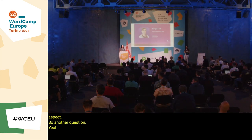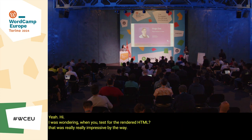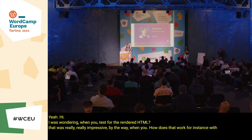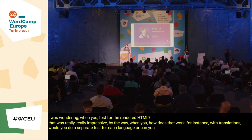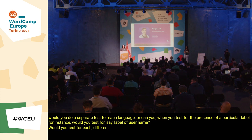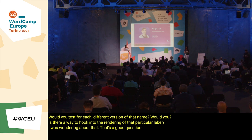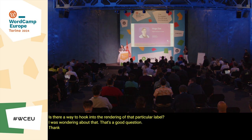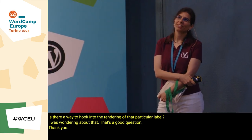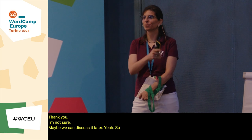Audience question: When testing rendered HTML, how does it work with translations — would you do a separate test for each language, or test for the presence of a particular label like 'username' in each version? Vraja: That's a good question. I'm not sure — maybe we can discuss it later at the Yoast booth.